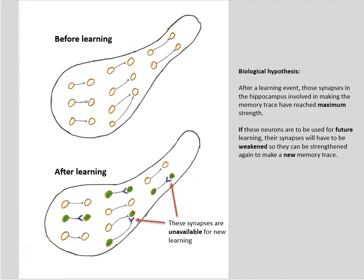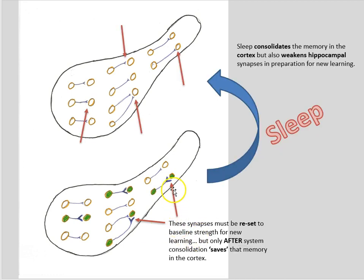And so here's where sleep comes into the picture. The idea is that these synapses must be reset to baseline strength for new learning. Of course, you want to do this only after system consolidation saves that memory in the cortex. So the role of sleep is to do synaptic resetting. Sleep is going to weaken synapses that were strengthened from the previous day's learning. So sleep consolidates the memory in the cortex, but also weakens hippocampal synapses in preparation for new learning.